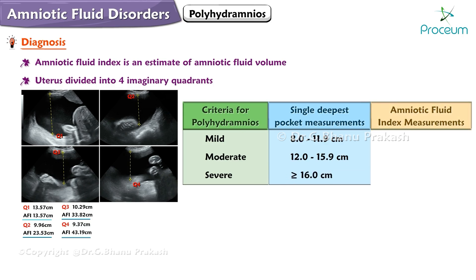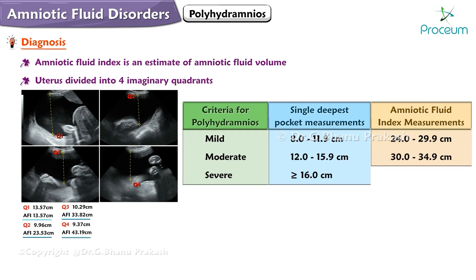Now the amniotic fluid index measurements. In mild polyhydramnios, the AFI ranges from 24.0 to 29.9 centimeters. In moderate polyhydramnios, it ranges from 30.0 to 34.9 centimeters. In severe polyhydramnios, the AFI is greater than or equal to 35 centimeters.